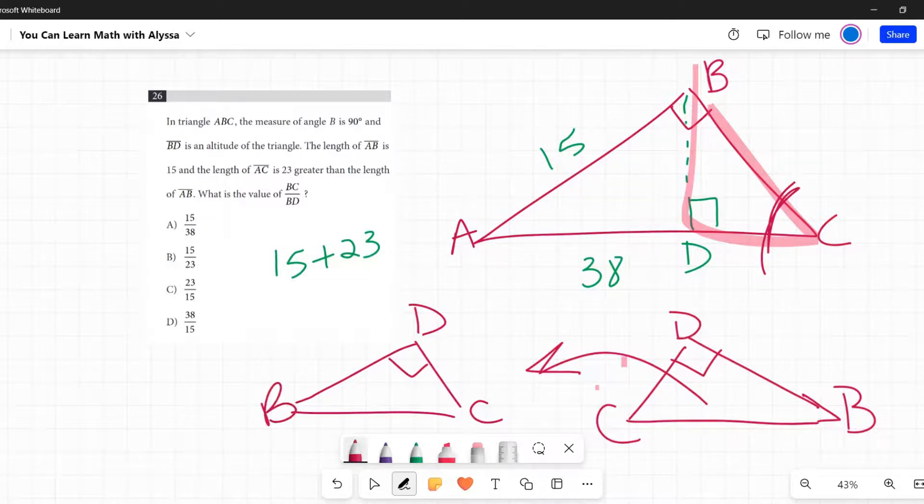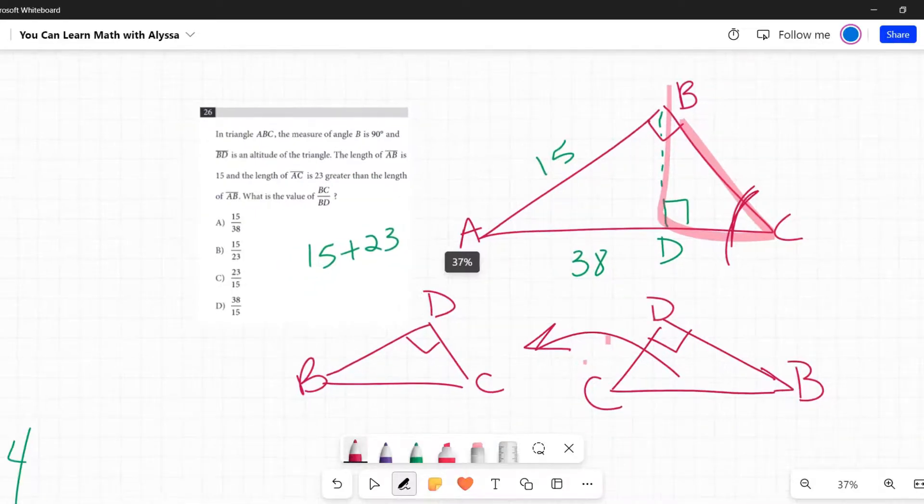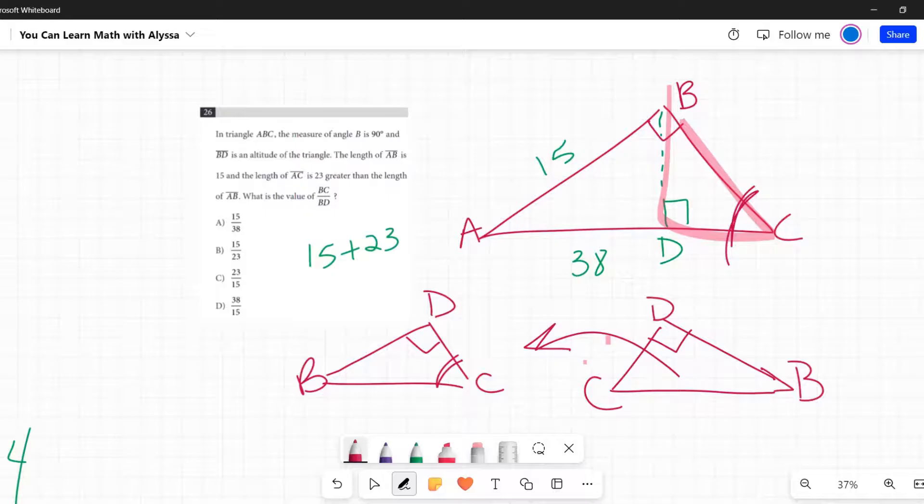Draw it that way. So angle C is here and angle B is here. So now they look, it's easier to see the corresponding angles. So I know they both have a right angle and they both share angle C. So there's my similar triangles.